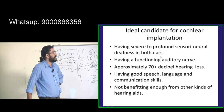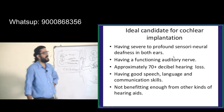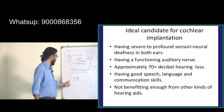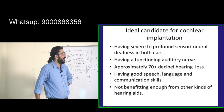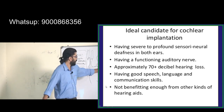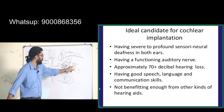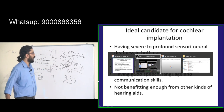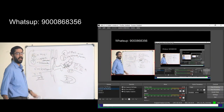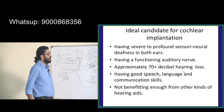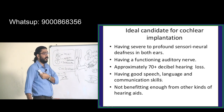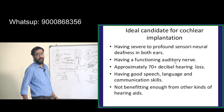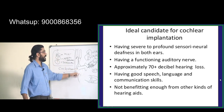The ideal candidate has severe to profound sensorineural deafness in both ears. Profound deafness is more than 91 decibels; severe is 71 to 91 decibels. The patient must have a functional auditory nerve — the cochlear nerve is a must. Other criteria include approximately 70-plus decibel hearing loss, good speech-language and communication skills, and not benefiting enough from conventional hearing aids.